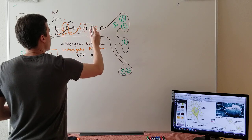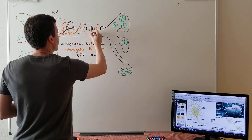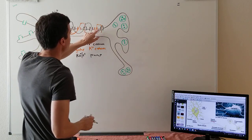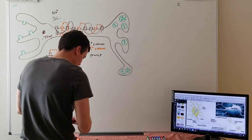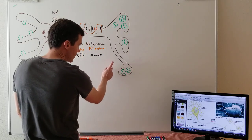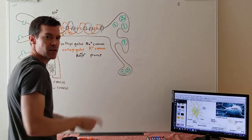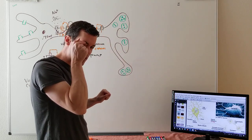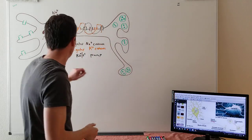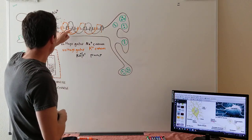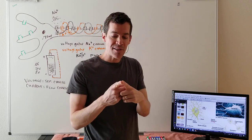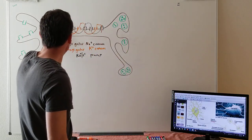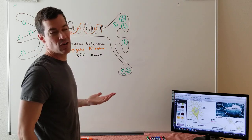The cycle is: diffusion in, diffusion out, active transport to reset — repeated over and over, all the way along the nerve cell. What's crazy is how fast this seems. When I touch this board, the message travels from my finger up to my brain almost instantaneously, even though it's going through countless diffusion-diffusion-pump cycles. It still seems instantaneous, which is remarkable when you think about it.